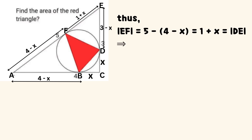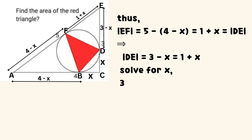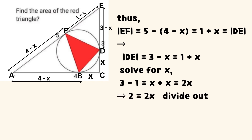Thus, EF equals 5 minus (4 minus X), which equals 1 plus X, and this equals line DE. It implies that DE equals 1 plus X.